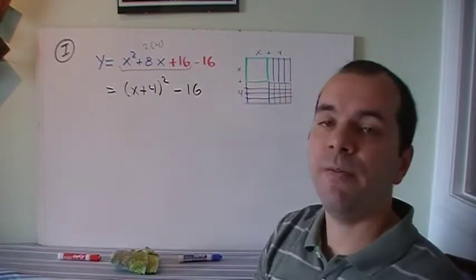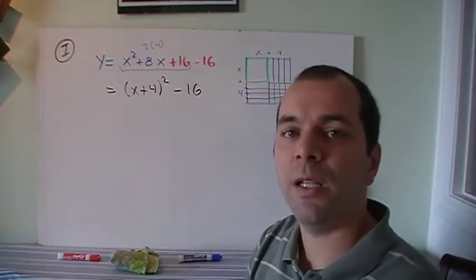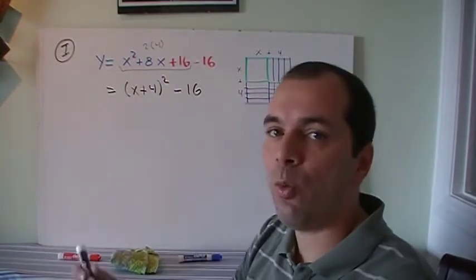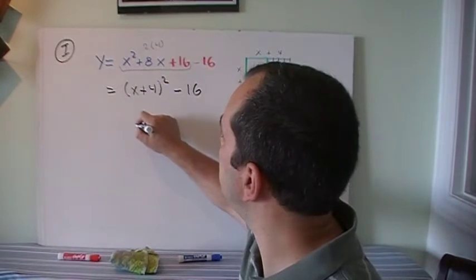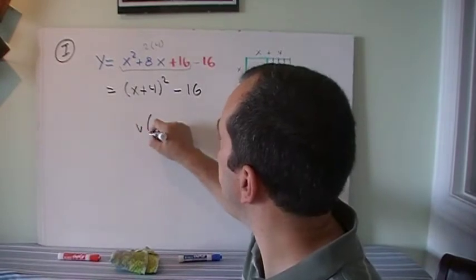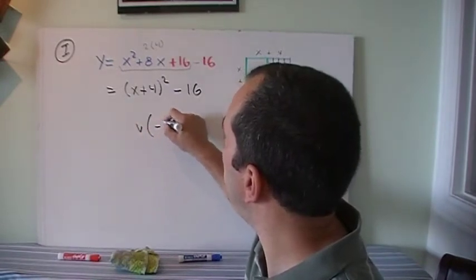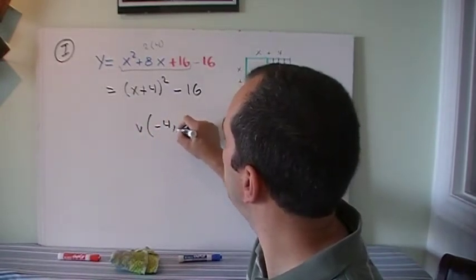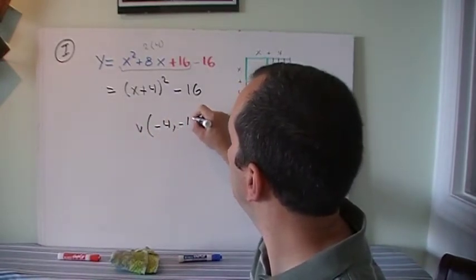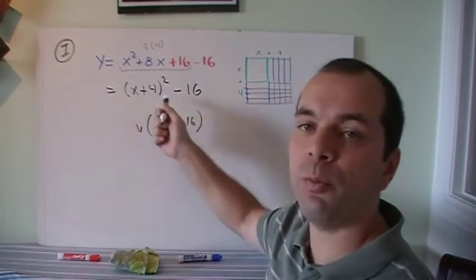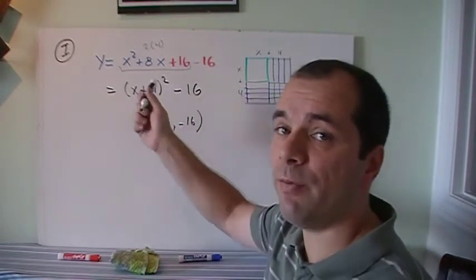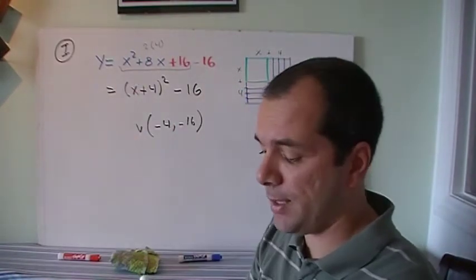So those three numbers factor as x plus 4 squared, and then the minus 16 is left over. That gives us vertex form, and therefore the vertex for this is negative 4 and negative 16, which we can read from vertex form pretty easily.